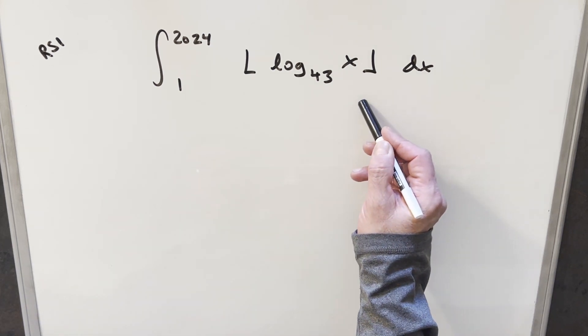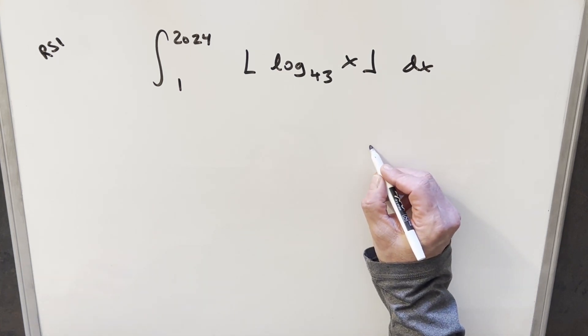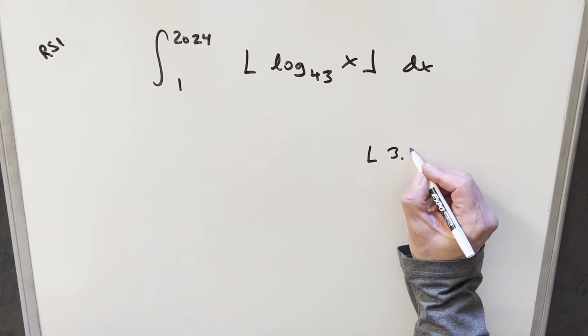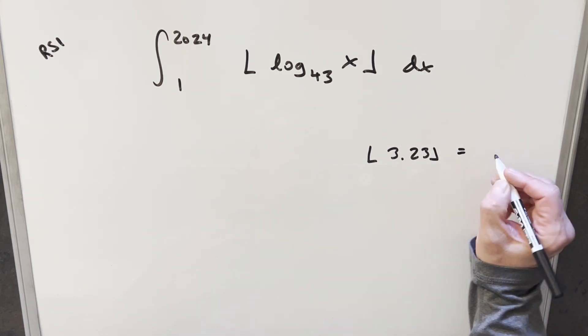Okay, to get started with this, let's just do a quick review on the floor function first. So the floor just rounds us down to the next lowest integer. So if I've got some, like let's say I have a decimal number like 3.23, the floor of this is just going to round me down to three.